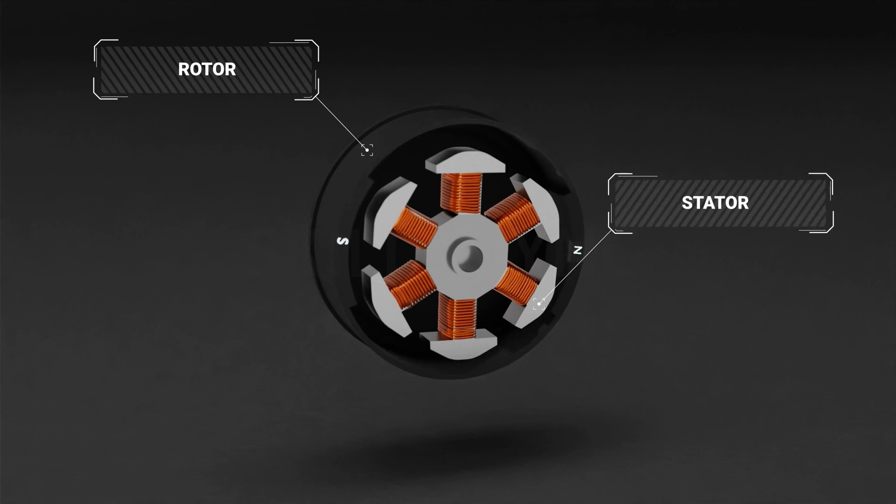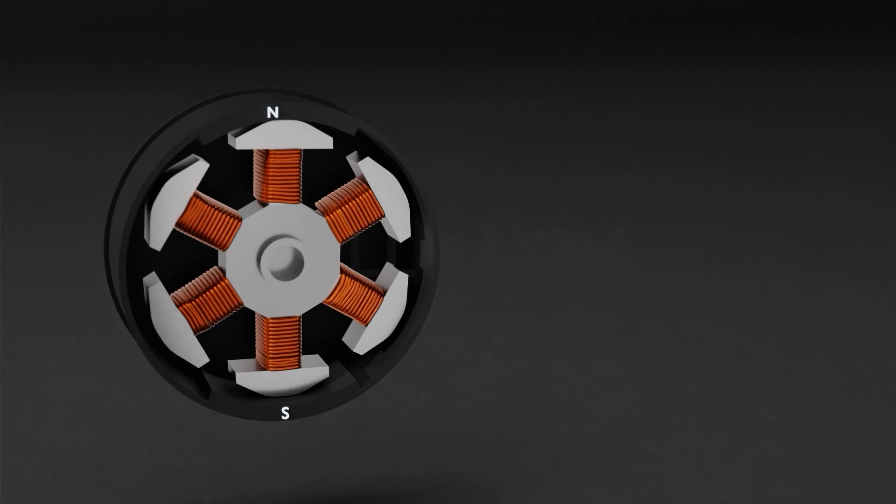BLDC motors have a rotor with permanent magnets on opposite ends and a stator that is an arrangement of coils inside it. When a DC current is given to the coils of the stator, it generates a magnetic field. Here we have three different sets of coils. When coil A gets energized, it generates a magnetic field that gets attracted to the opposite pole of the permanent magnet.